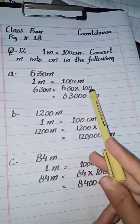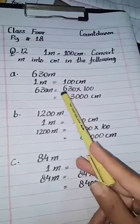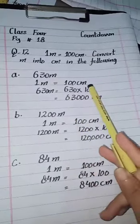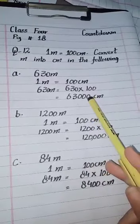Now there is no need to do multiplication steps directly. You can write 630 as it is, and since there are two zeros in 100, you will add two zeros here.